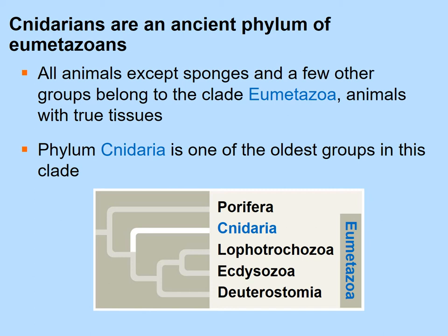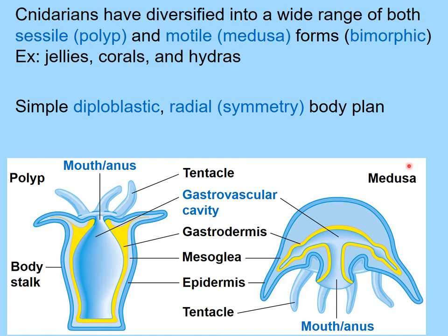Unlike sponges, the next group to branch off — the Cnidarians — are considered Eumetazoa because they have true tissues. Cnidarians can be sessile, in a form called the polyp, or motile, in a form called the medusa. Species that alternate between both forms are called dimorphic. Examples include jellyfishes, corals, and hydra.